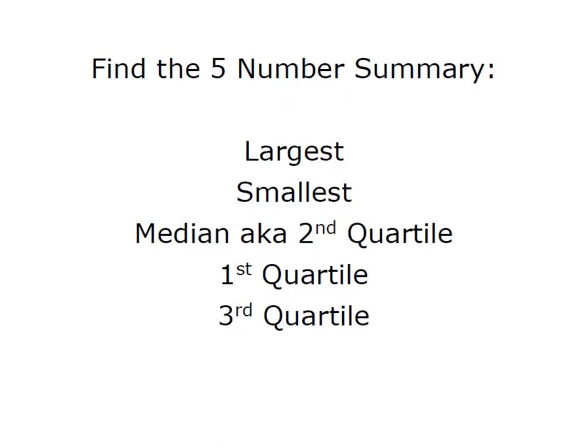The foundation of a box plot is what we refer to as a five number summary. That's made up of the largest, the smallest value, the median, which is also the second quartile or Q2, and then the first and the third quartile. Let's do the easy ones first and then we'll get to these quartiles.